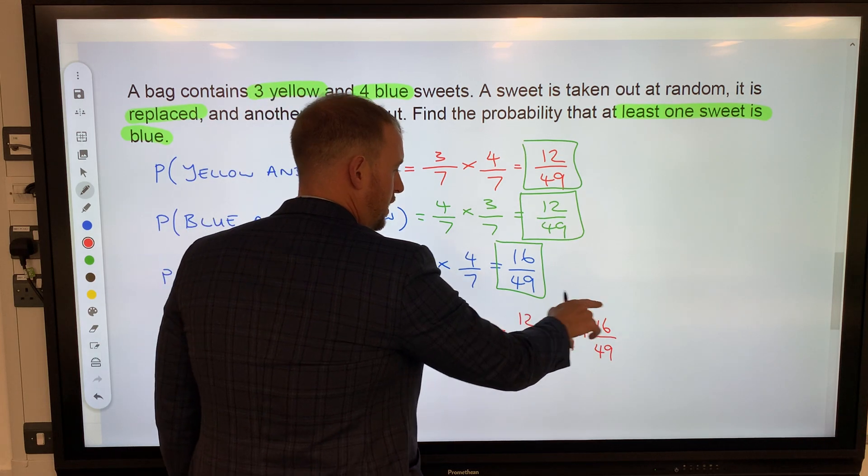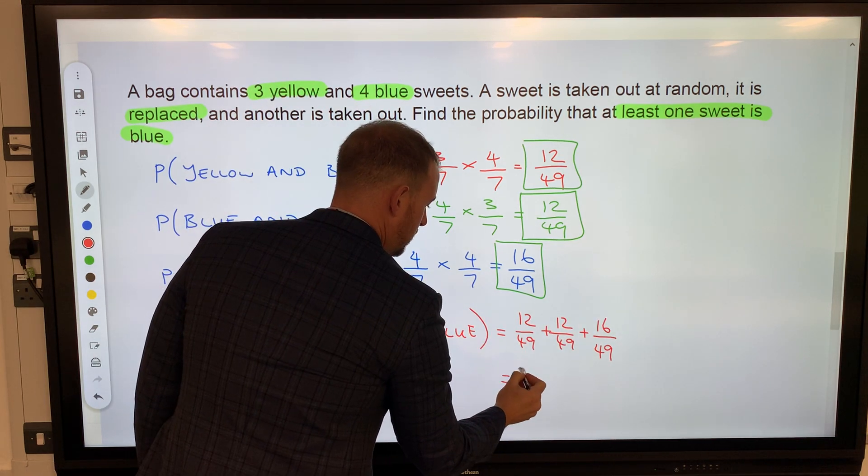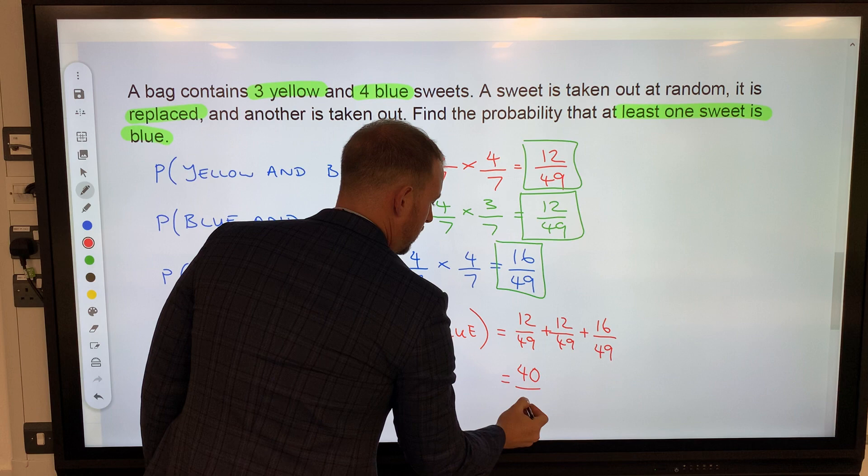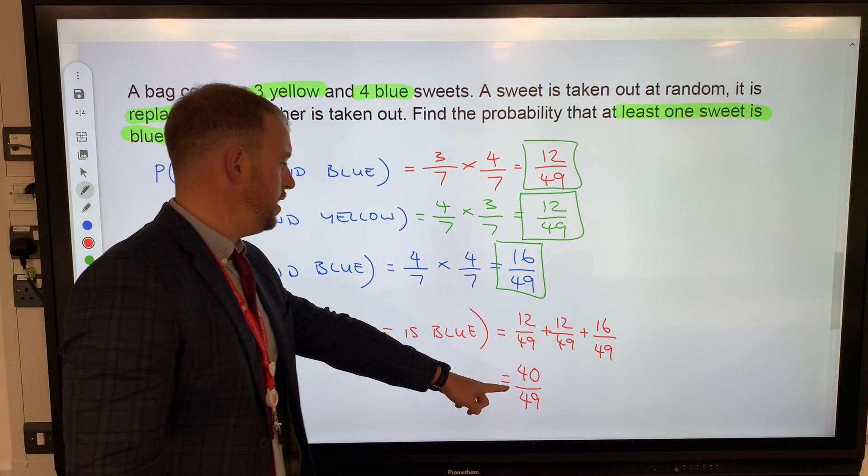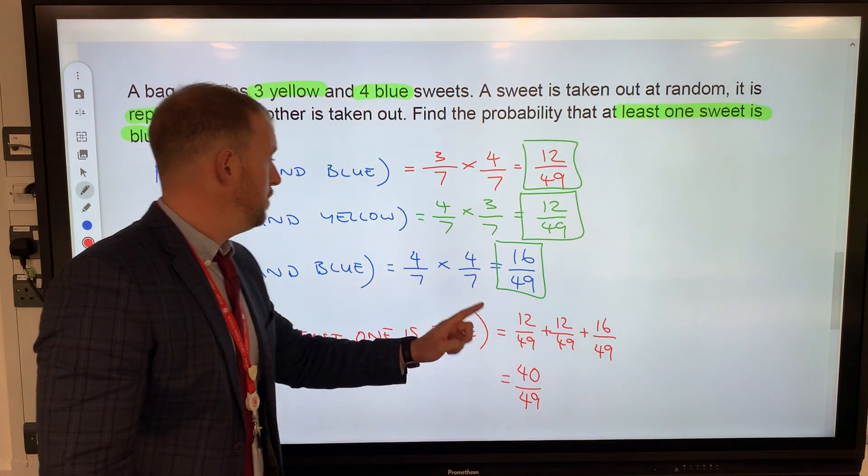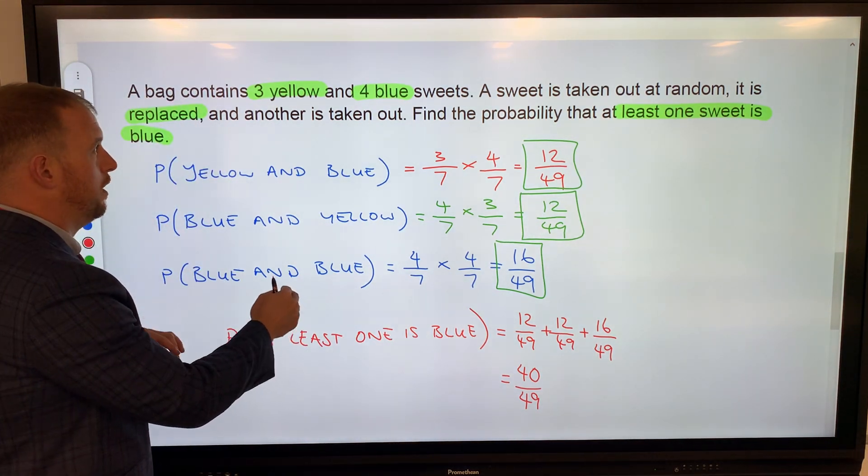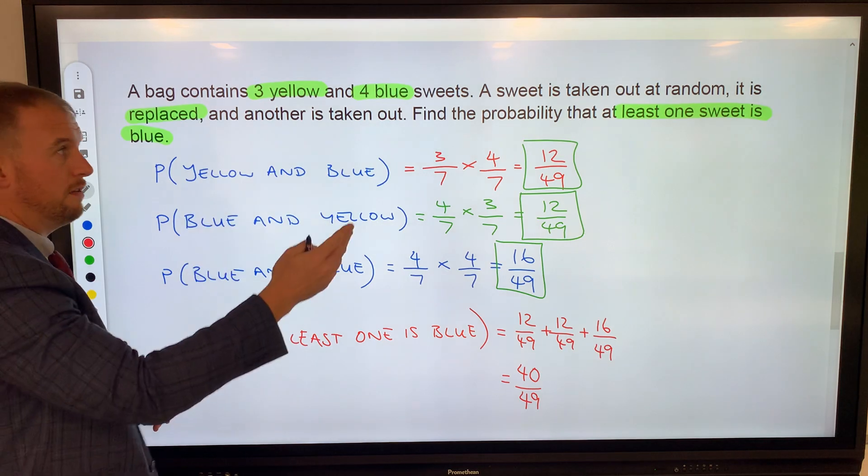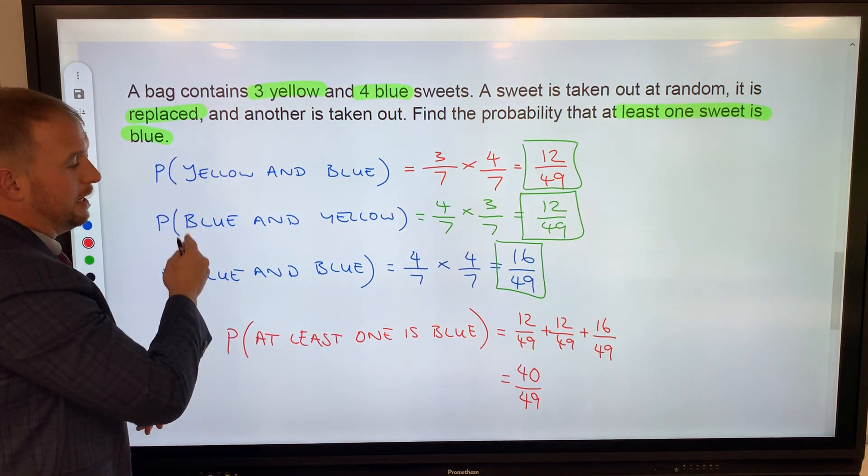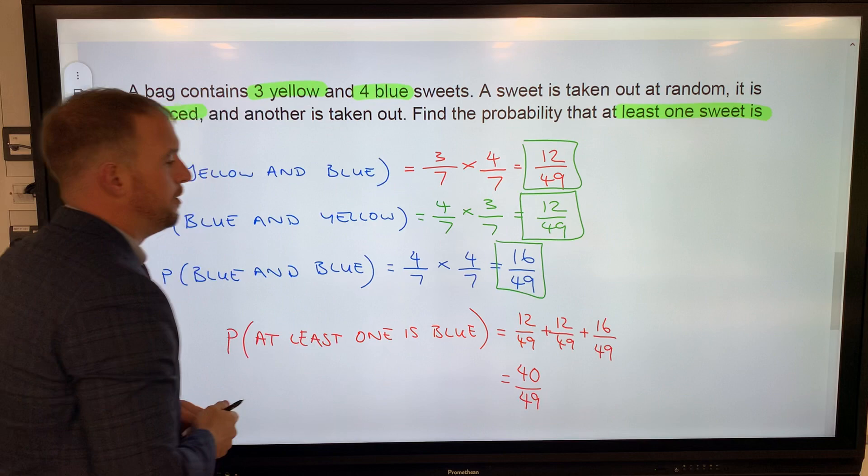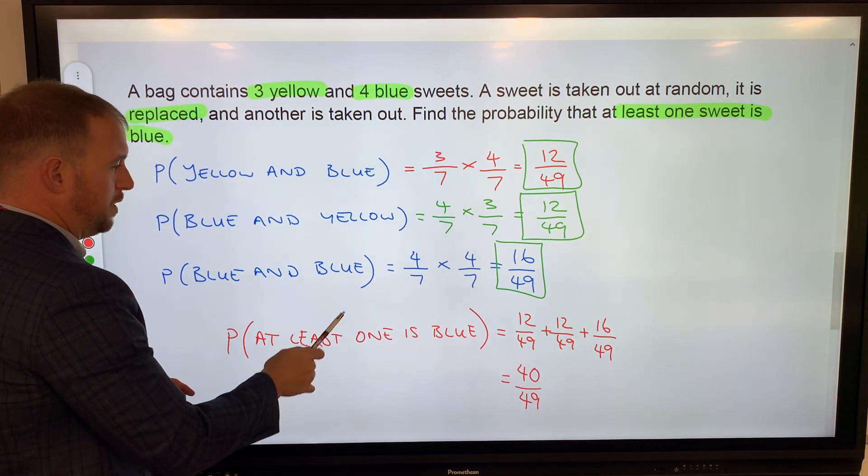12 and 12 is 24, add the 16, it's 40—40 over 49. That's nearly certain, which we know is right because the only other outcome could be yellow and yellow. 3/7 times 3/7 again would be 9/49, and that's the bit that's missing. So the probability that at least one is blue...